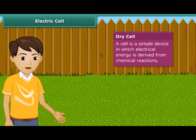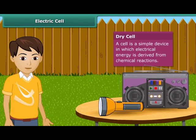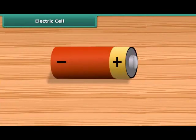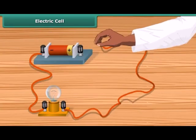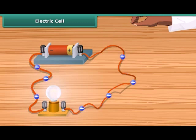A dry cell battery used in a torch or transistor radio is a source of electric current. Every battery has two terminals marked plus and minus. When a metallic wire connects these two terminals, the electrons resulted from chemical reaction start flowing through the wire, constituting an electric current. These electrons flow from the negative to positive terminal. Thus, a cell is a simple device in which chemical energy is changed into electric energy.